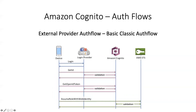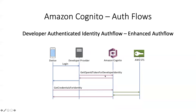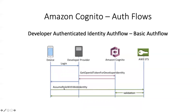We also have the basic auth flow using AssumeRoleWithWebIdentity — this pops up in the exam. When using login providers with the basic auth flow, any kind of social media providers, you use AssumeRoleWithWebIdentity to get your temporary credentials. The developer-authenticated identity auth flow is different because here you have your own customized authentication solution. The device logs in with the developer provider authentication service, which gets an OpenID token from Amazon Cognito, which is then exchanged for temporary credentials via AWS STS.